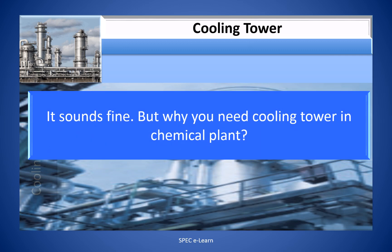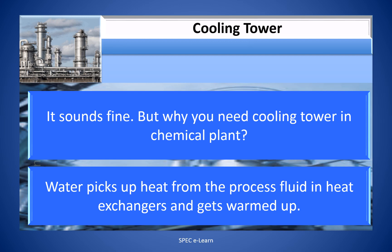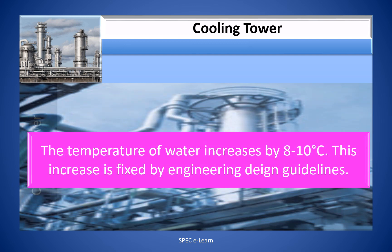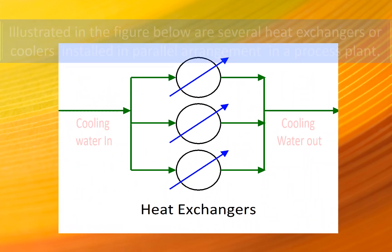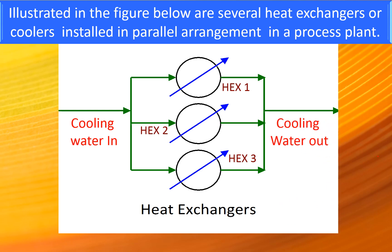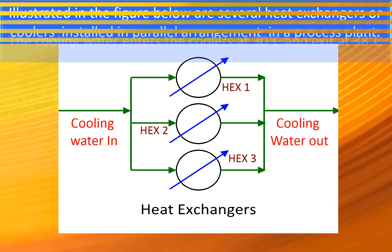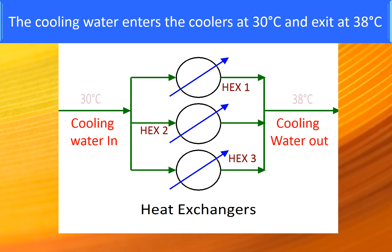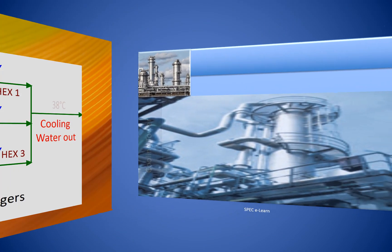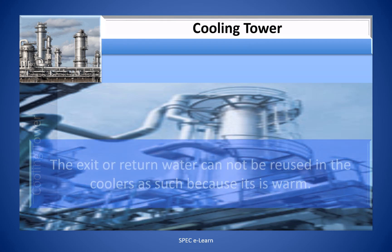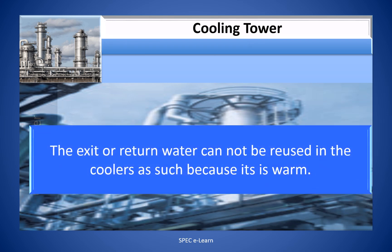But why do you need a cooling tower in a chemical plant? Water picks up heat from the process fluid in heat exchangers and gets warmed up. The temperature of the water increases by 8 to 10 degrees centigrade, fixed by engineering design guidelines. Several heat exchangers installed in parallel — cooling water enters at 30°C and exits at 38°C.